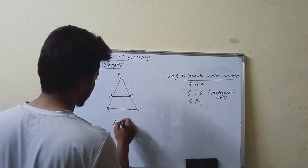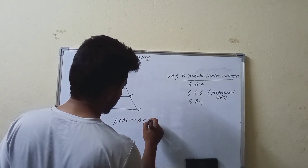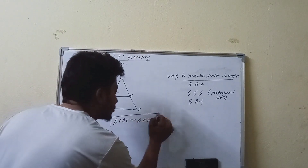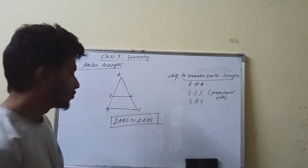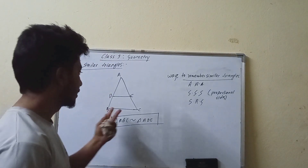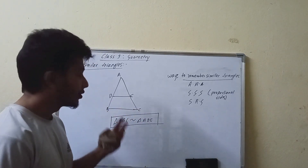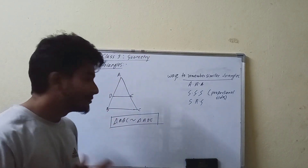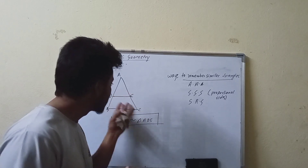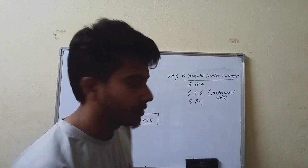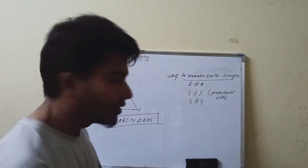Triangle ABC is similar to triangle ADE. This is the theorem we are discussing. The theorem states that when a line is drawn parallel to one side of a triangle, the triangles formed correspond to each other and are similar triangles. I will be able to cover this in the video.